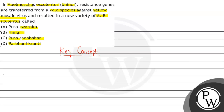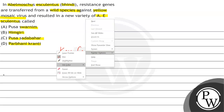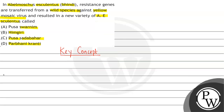A new variety of Abelmoscus esculentus was created — what is it called? Option A: Pousaswarnim. Option B: Himgiri. Option C: Pousasadabaha. Option D: Parbhani Kranti. The concept for this question will be about what processes are involved in plant breeding and how advances are being made.